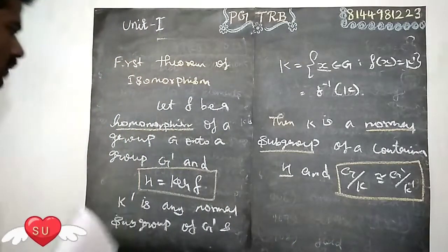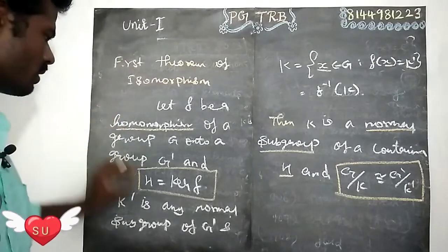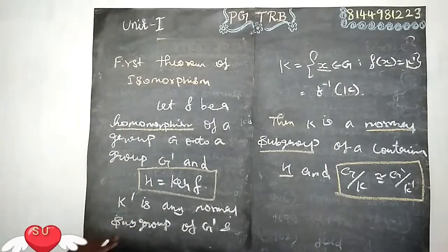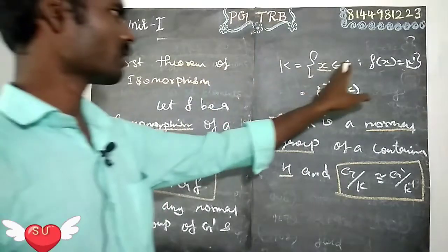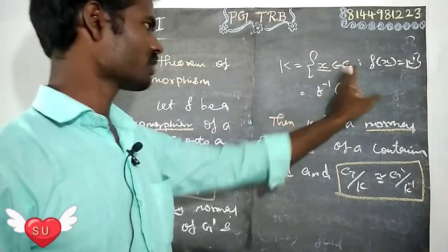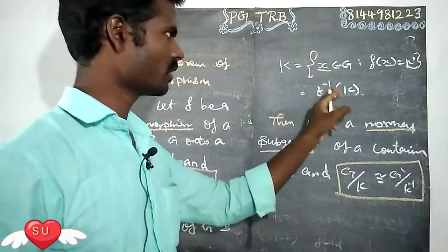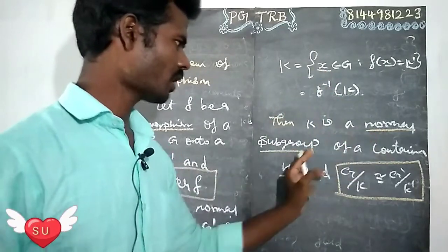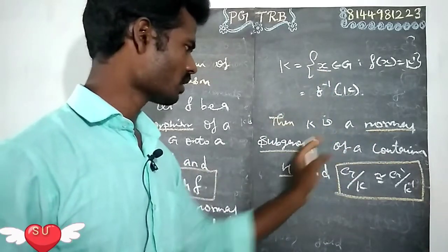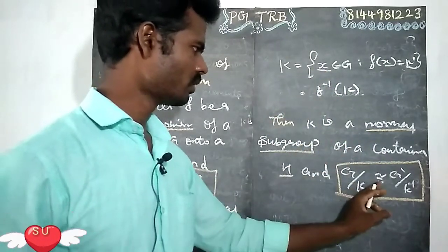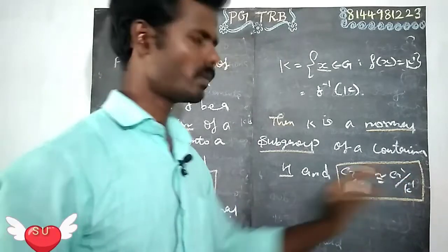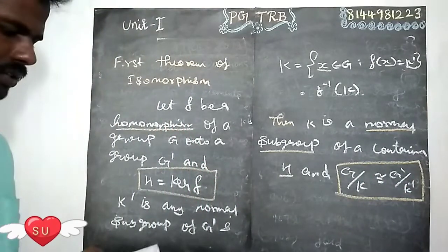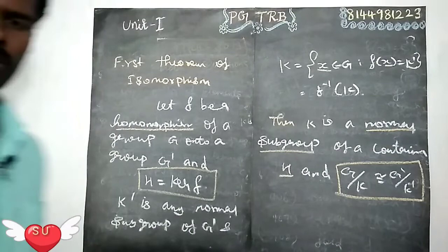K is a normal subgroup of G containing H, and G divided by K is congruent to G-dash divided by K-dash. So K equals the kernel of F1. K-dash is a normal subgroup. G divided by K is congruent to G-dash divided by K-dash. This is the first theorem.